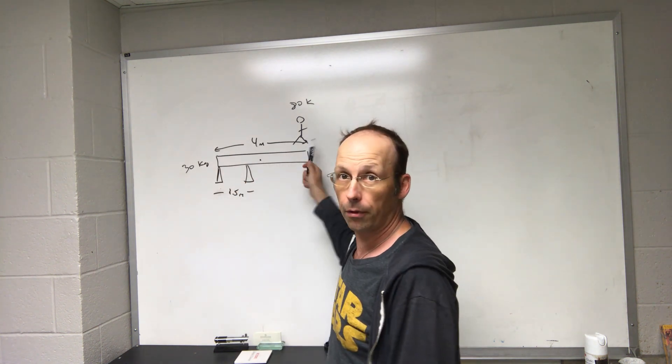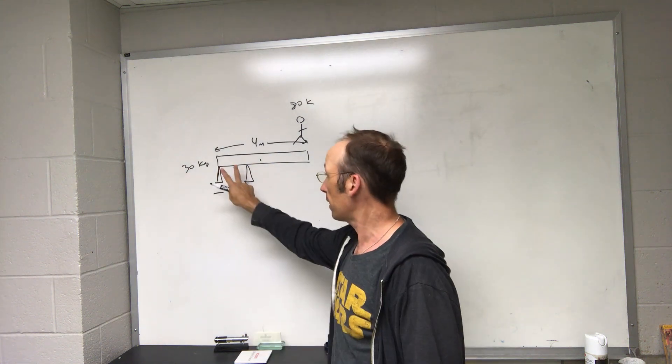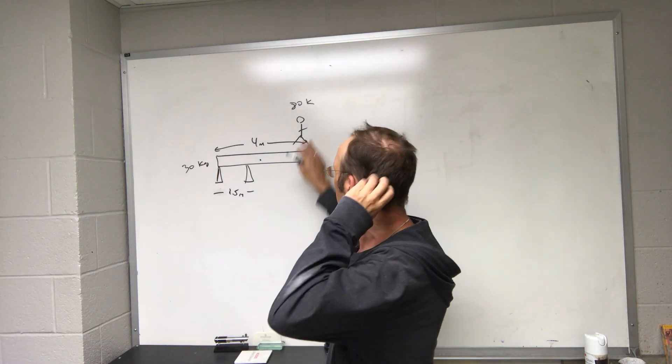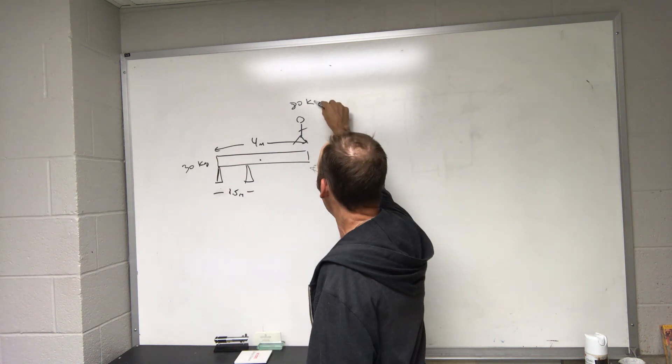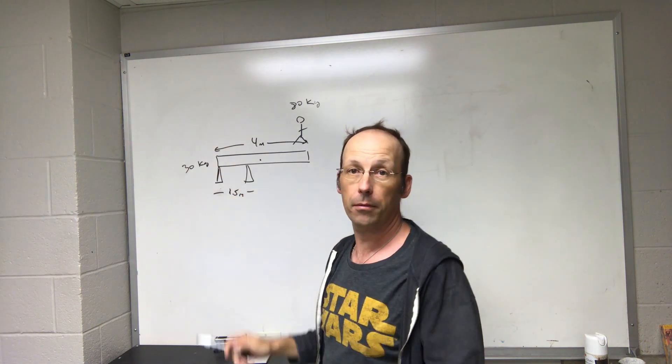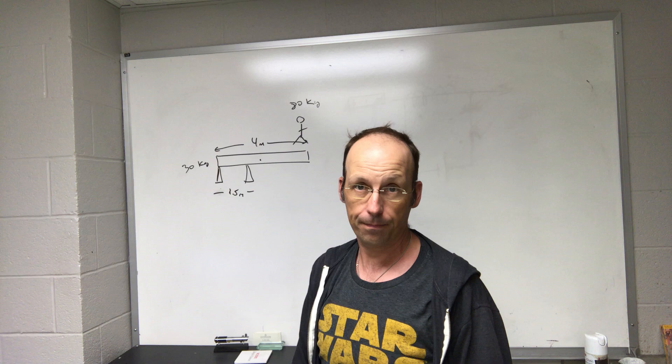I have a diving board and a person standing on the end of the diving board. You'll notice the diving board has two supports like that, and we want to find the force for both of these supports. Here's what we have: an 80 kilogram person. This is a 4 meter diving board and these supports are 1.5 meters apart. The diving board is 30 kilograms itself.